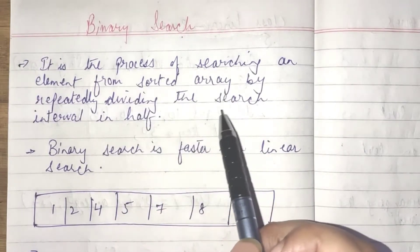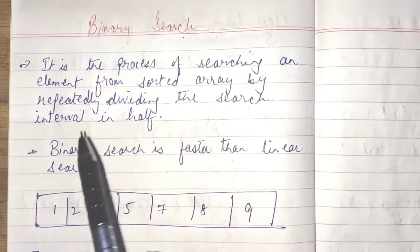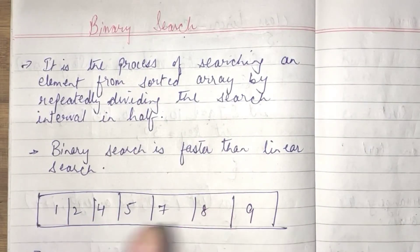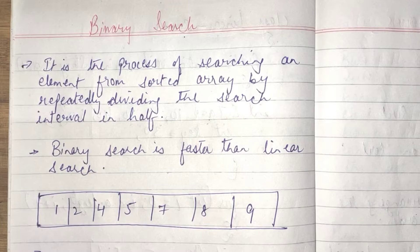Now, in a binary search, we are not searching all the elements. We are simply dividing the list of array into the two parts and according to it, one after another, or according to the requirement, we can search the element.